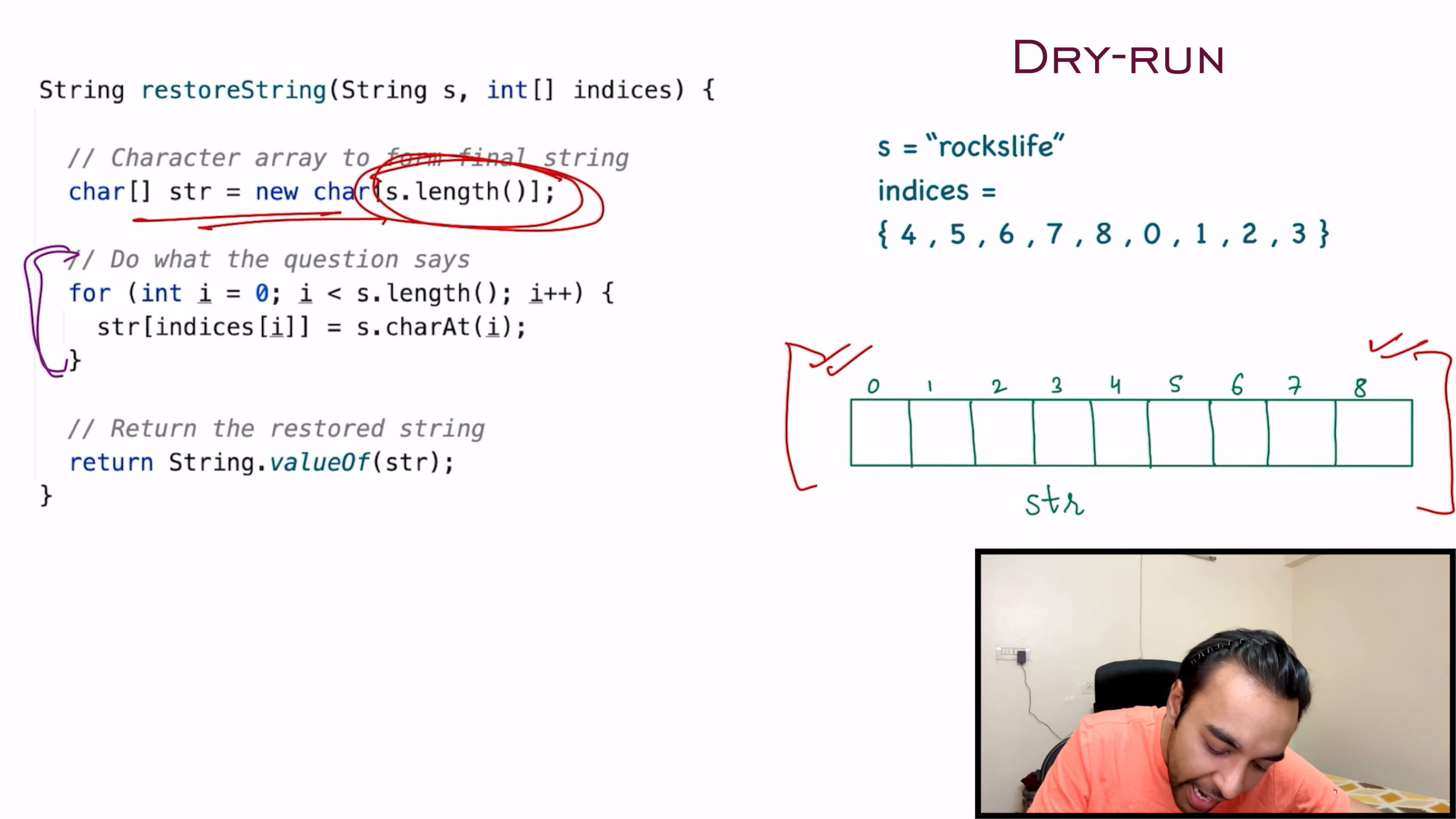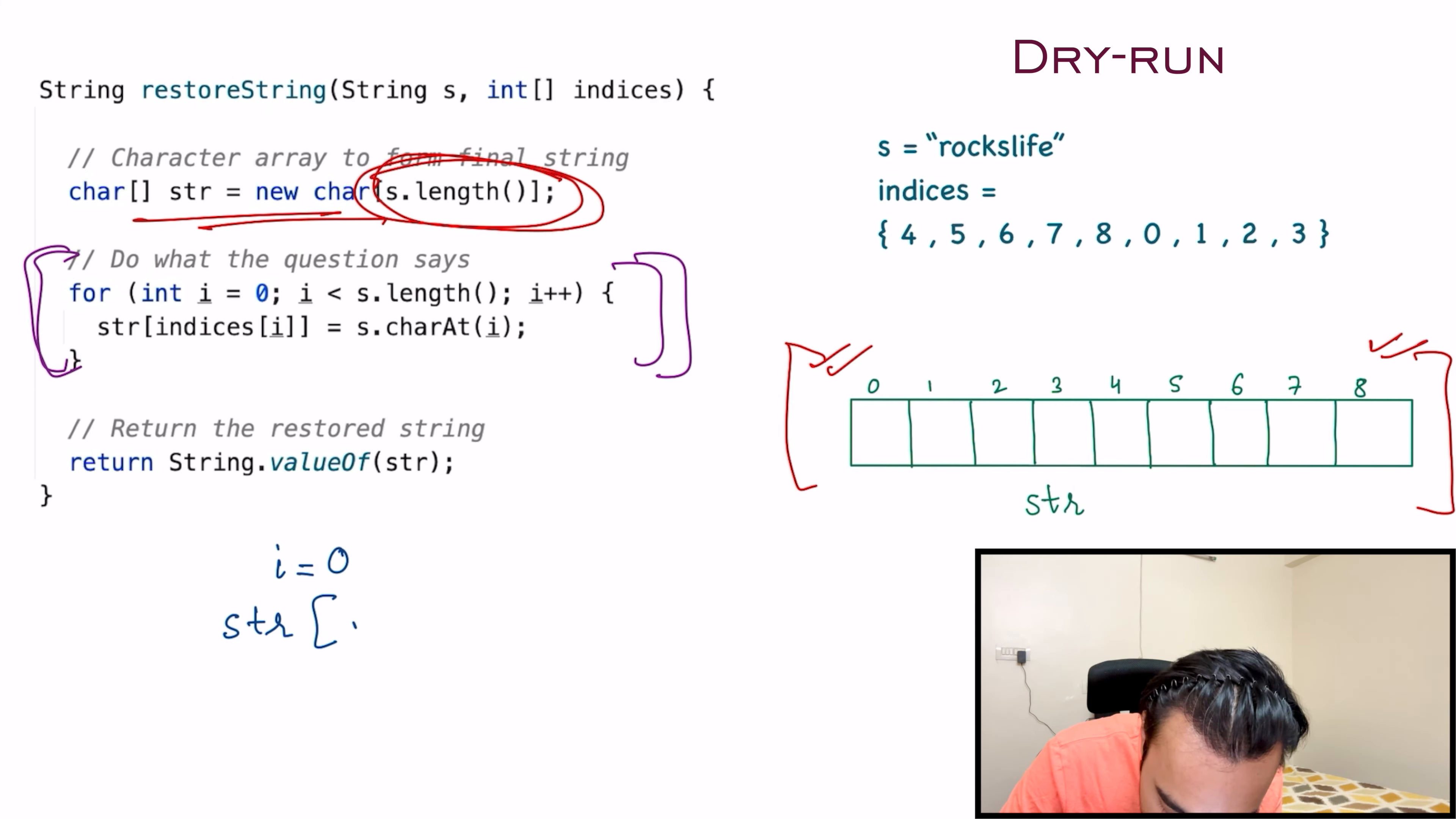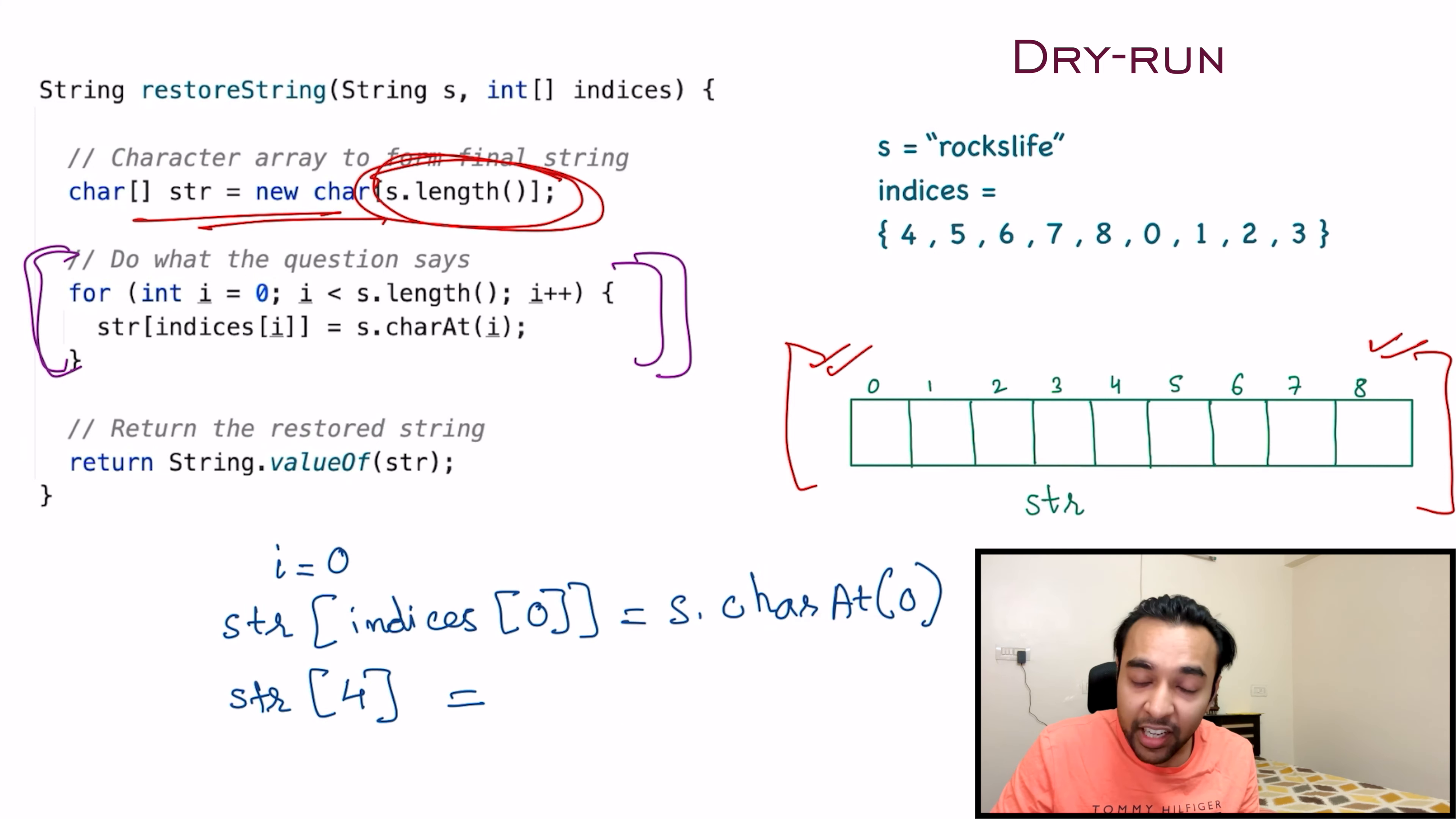Now check out the second loop. And this is where all the magic happens. What was our question saying? Our question said that in the indices array, the first value is determining where will my first character go. And that is exactly what we do. Check it out. The current value of i is 0. So what do I do? I do str at indices[0], which is 4. So I'm doing str at 4. So this is now resolving to this particular block. And what do you equate it to? You equate it to s.charAt(0). And what is s.charAt(0)? That is the letter R. So I will do R over here. And as soon as I do it, R will come over here.